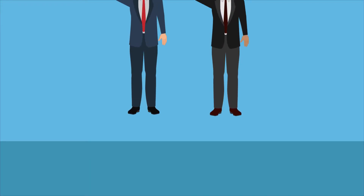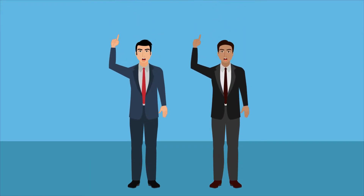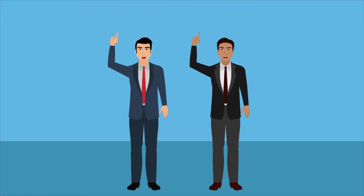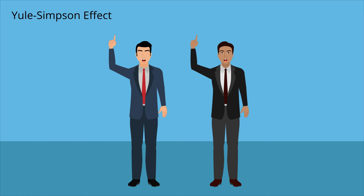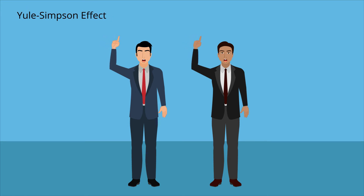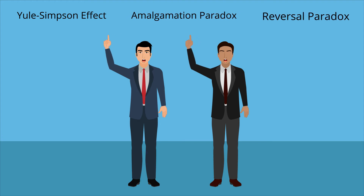Simpson's paradox was first brought to widespread attention by his namesake, British statistician Edward H. Simpson, in 1951. It is sometimes referred to as the Ewell-Simpson effect after the statistician Eudny Ewell, the first preeminent scholar on the topic. Other names include the amalgamation paradox and the reversal paradox, referencing the reversal of the correlation that occurs when subsets of data are combined.